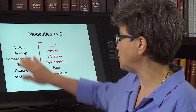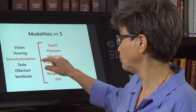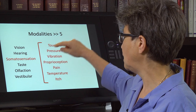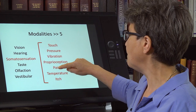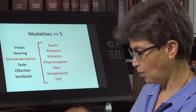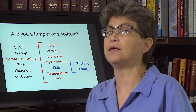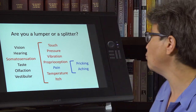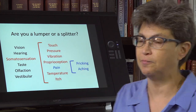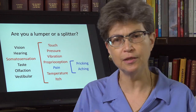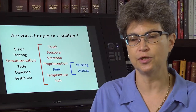It's not just the vestibular system — each of these can be divided into several sub-modalities. Within somatic sensation alone, we have touch, pressure, vibration, proprioception, pain, temperature, and itch. We can go even further: within pain, there are at least two types — a pricking pain and an aching pain. Depending on whether you're a lumper or a splitter, I think there are easily a few dozen different sensory channels.